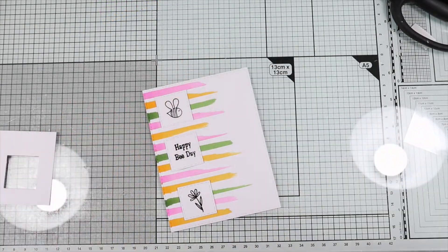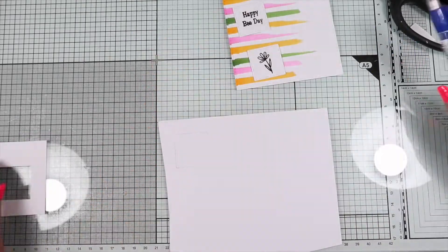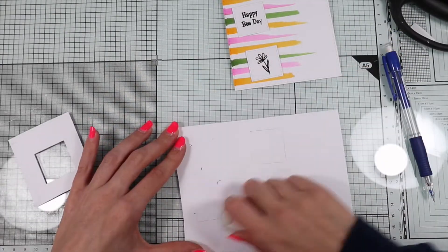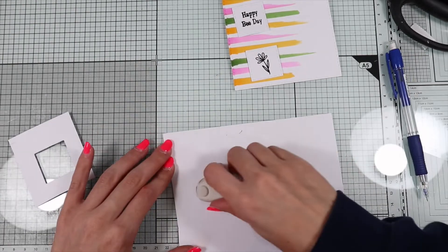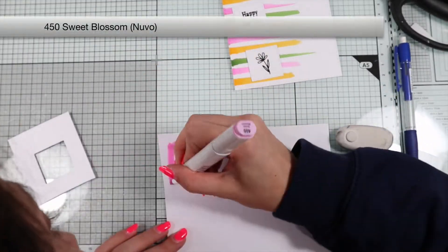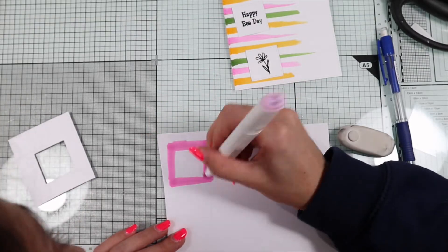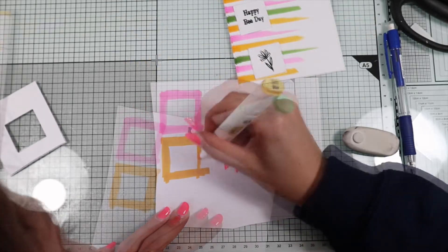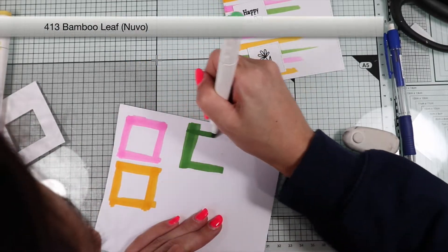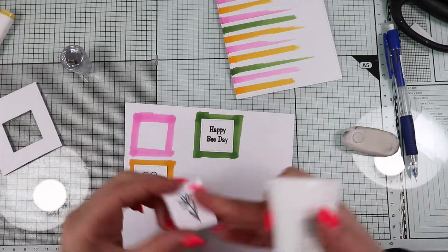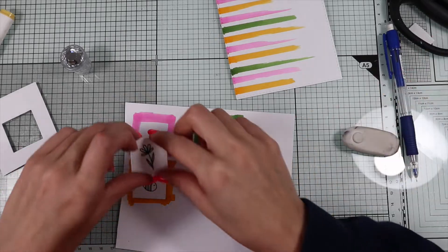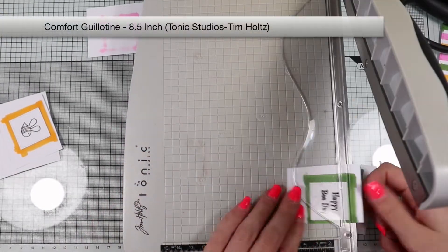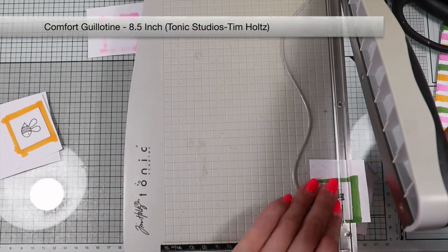Next, I die cut all three stamps with a square die. I'd like to add finishing borders using the three markers I used for the background. So I'm going to draw the outlines of the square with a pencil, and I color the outside borders with the three markers. I glue the three squares with the stamps and trim all of them, leaving the finishing edges.